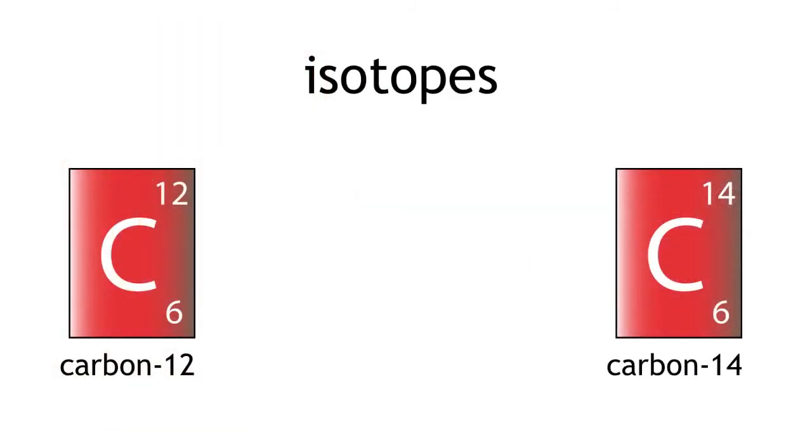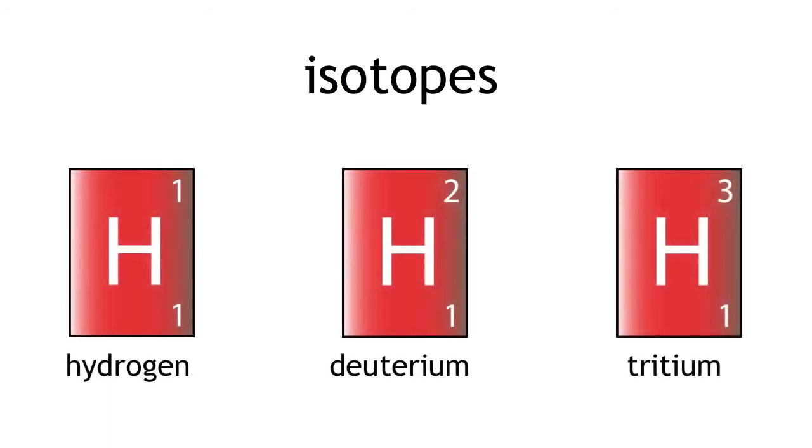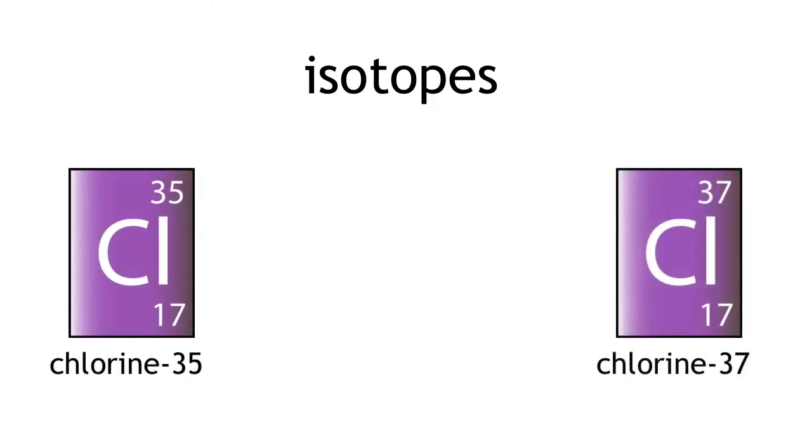Carbon-12 and carbon-14 are not the only examples of isotopes. There are many more such as hydrogen, deuterium, tritium, and chlorine-35 and chlorine-37.